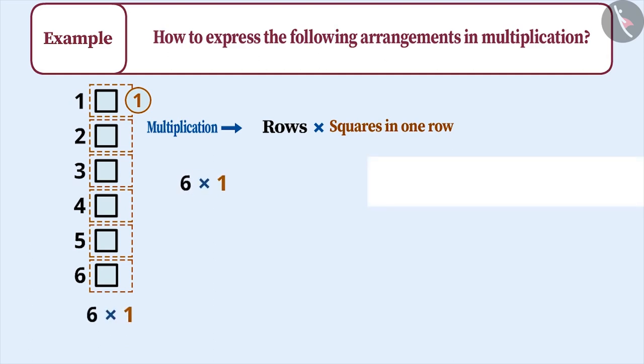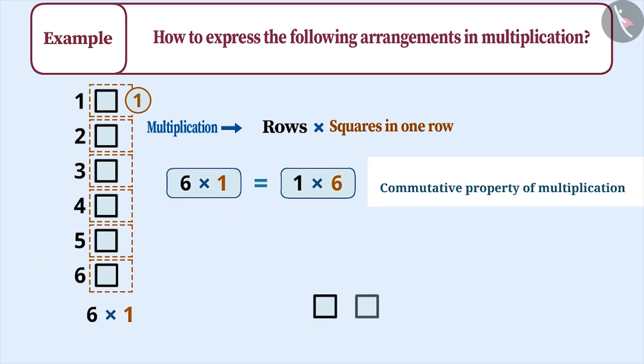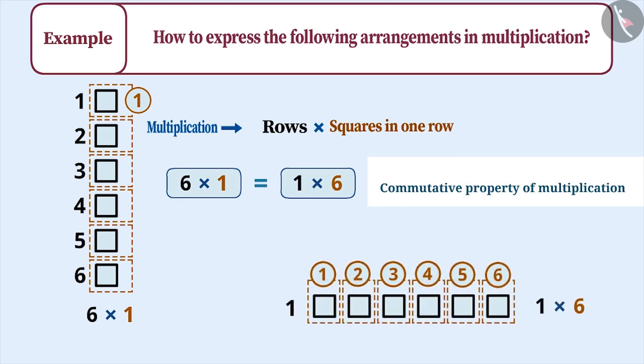As discussed earlier, by using the commutative property of multiplication, we can write 6 multiplied by 1 as 1 multiplied by 6 as well. But in practice, it will be expressed by making 6 squares in one row.